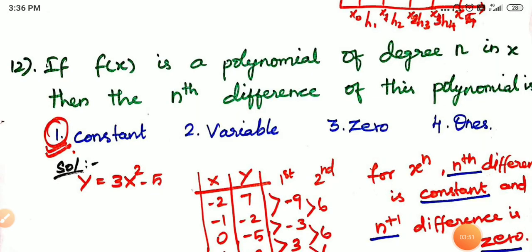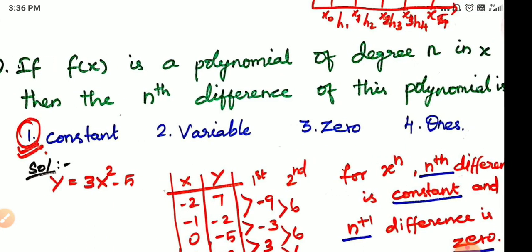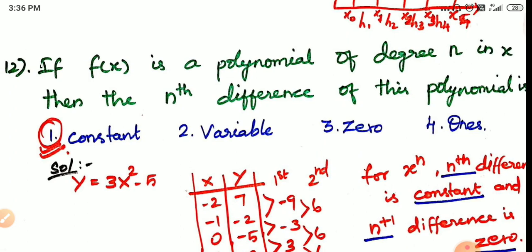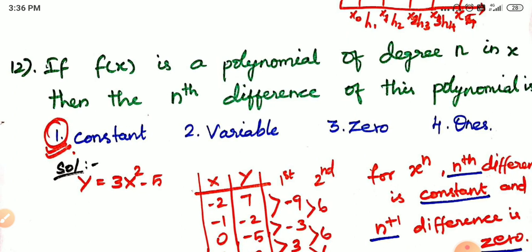If f(x) is a polynomial of degree n in x, then the nth difference of this polynomial is constant. If you want to mention a polynomial of degree n in the f(x) function, the nth difference is constant, and the value of the constant variable approaches 0 and 1.